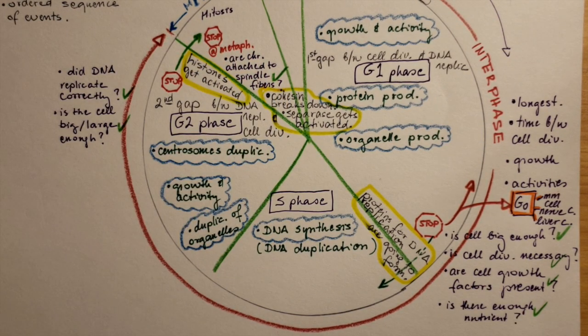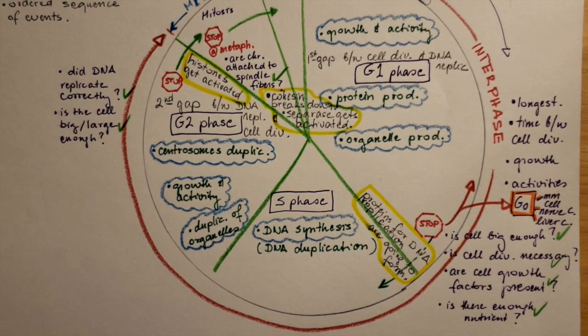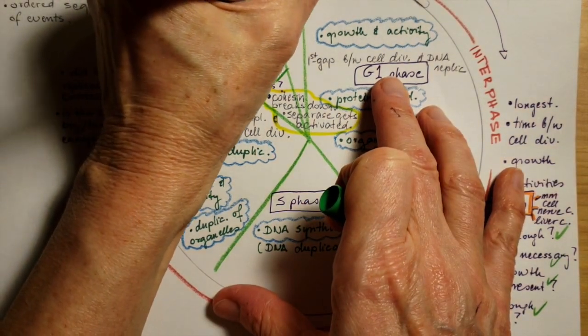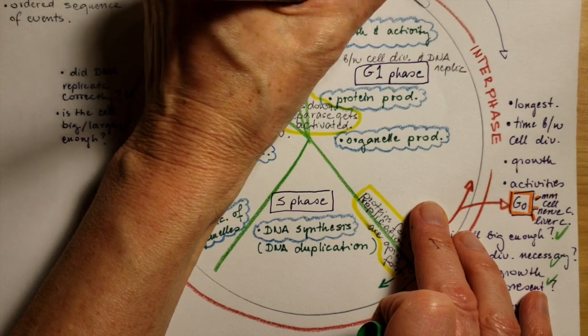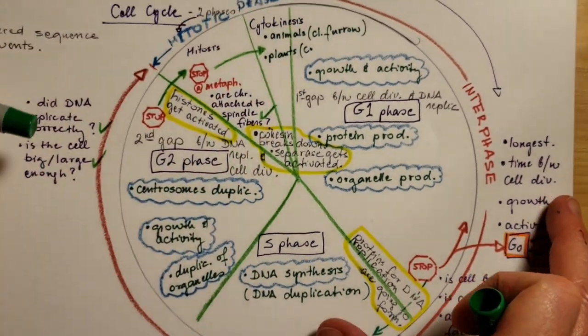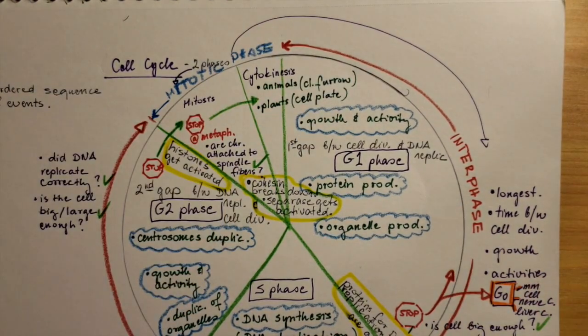And after the mitosis is finished, the cell will enter into the cytokinesis stage that in the animals, cleavage furrow will form and in plant cells, the cell plate will form. So they are how they are different in cytokinesis, the way they perform it.